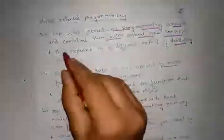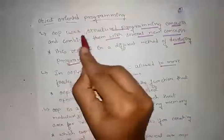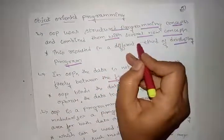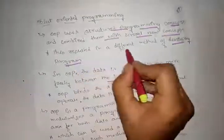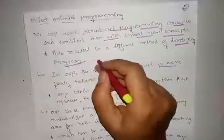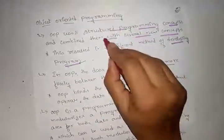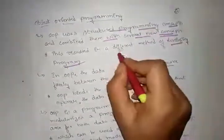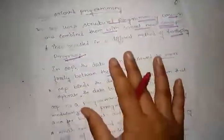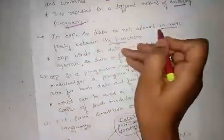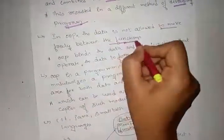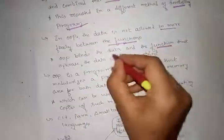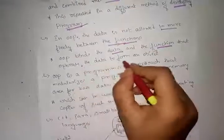Next, object oriented programming. OOP uses structured programming concepts and combines them with several new concepts, resulting in a different approach to developing programs. In OOP, data is not allowed to move freely between functions, because OOP binds the data and the functions together.